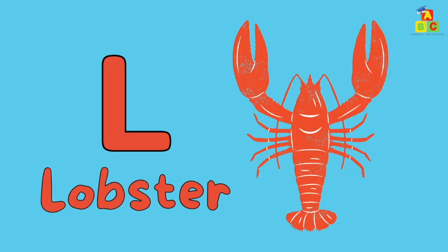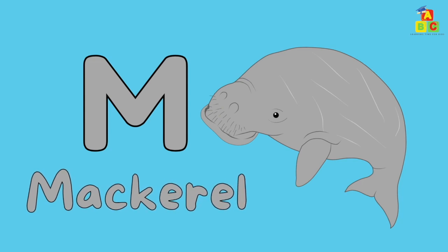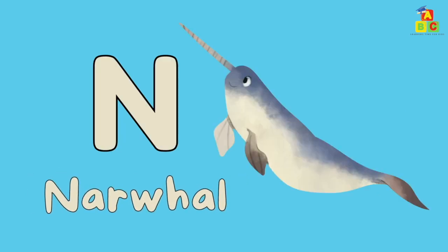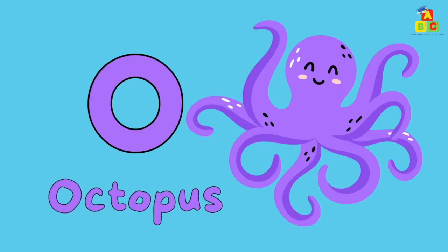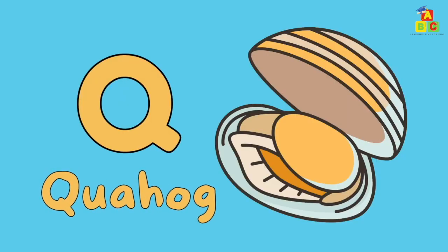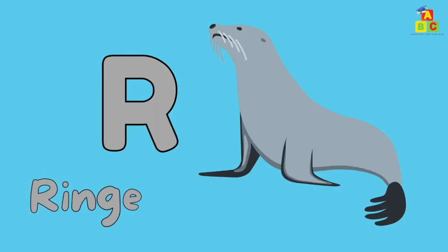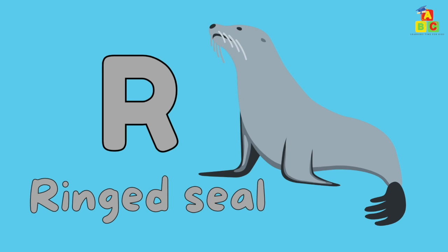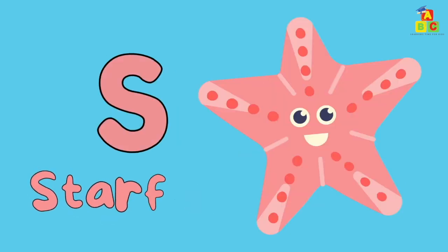L is for Lobster. M is for Mackerel. N is for Narwhal. O is for Octopus. P is for Prawn. Q is for Quahog. R is for Ring Seal. S is for Starfish.